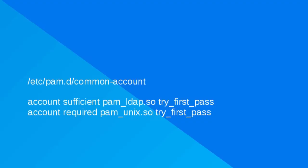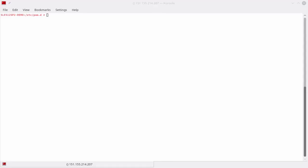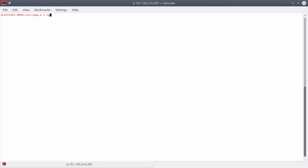To enable all services using the common-account file to use LDAP, add a line with the pam_ldap module. In our configuration, we will make the control sufficient again so that if pam_ldap is successful, there is no need to launch the pam_unix module.